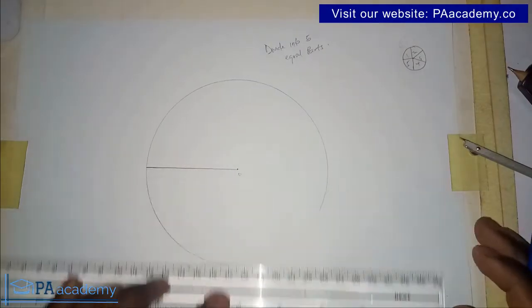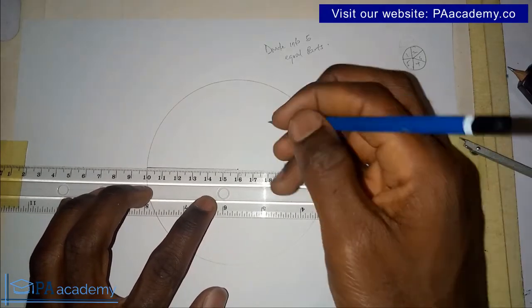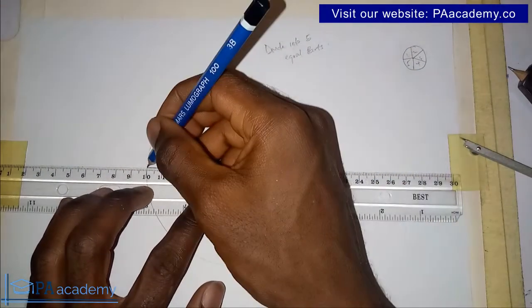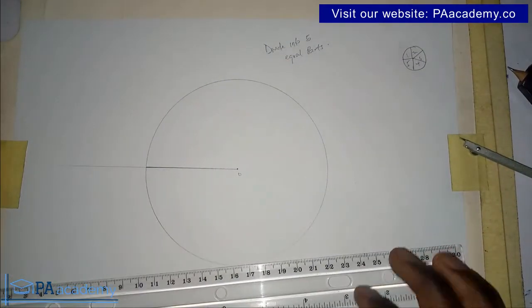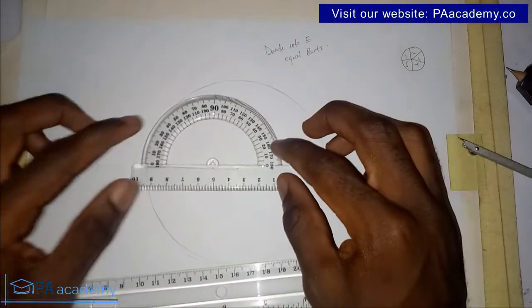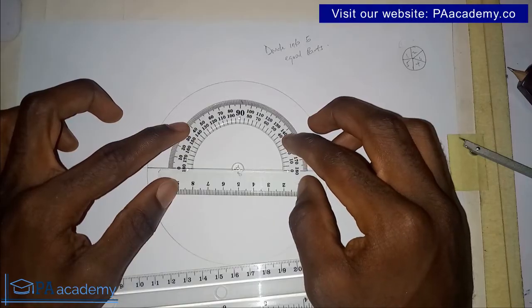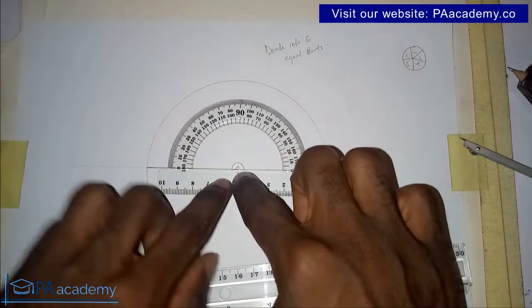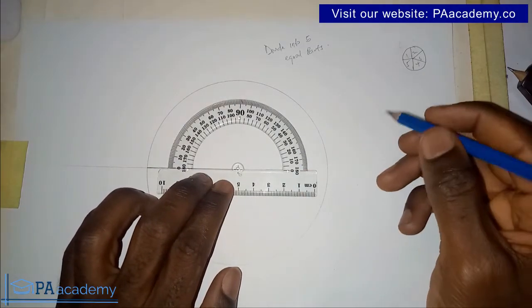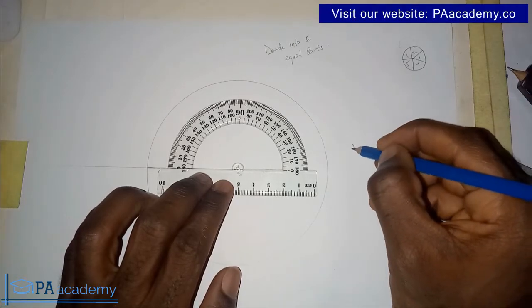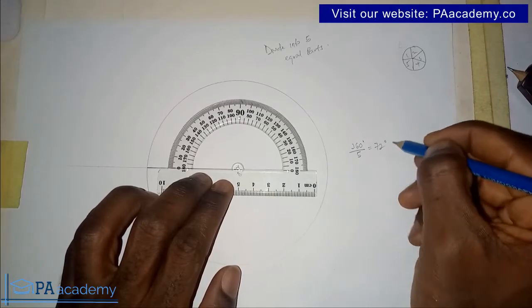Depending on the size of the radius, you can extend it outward with a faint line, especially if you are working with a smaller circle. That way, when you bring in your protractor you can easily place it well. Place the protractor at the center. Since we are dividing into five parts, and the total angle in a circle is 360 degrees, we have 360 divided by 5, which gives us 72 degrees.